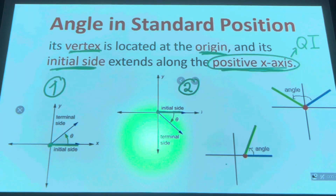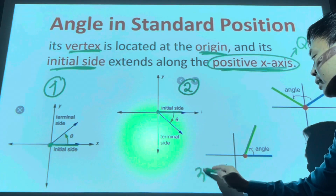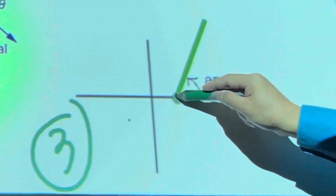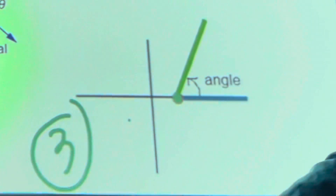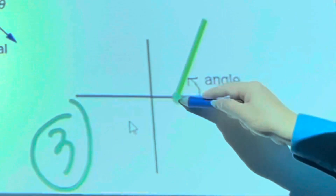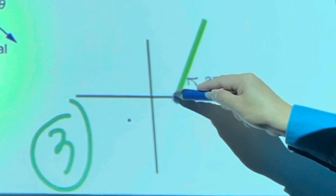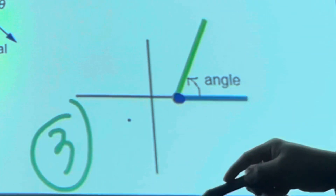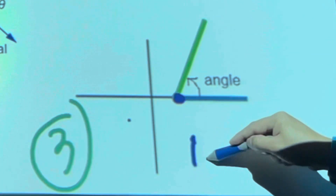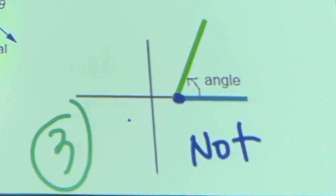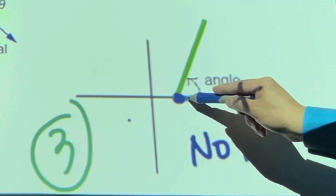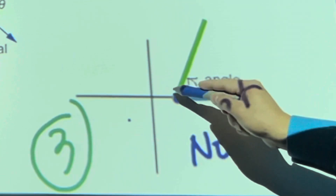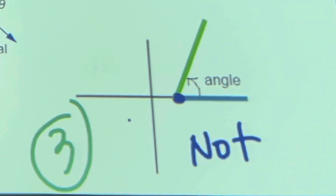In the third example, the problem is the vertex — the vertex is on the x-axis but not at the point of origin. So the third example is not in standard position because of the vertex, although the initial side is on the x-axis.